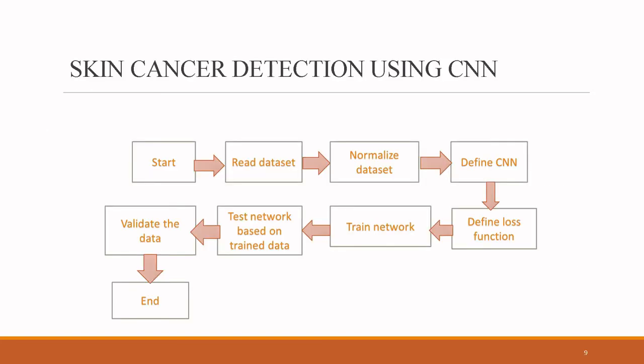The workflow of skin cancer detection using CNN starts with reading the dataset, then normalizing it, defining the CNN, and defining the loss function. Next, we train the network, test it based on the trained data, validate the data, and finally calculate the loss function and accuracy.